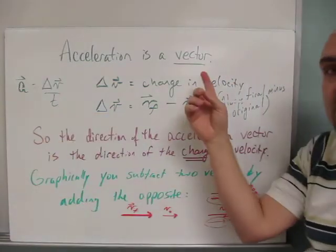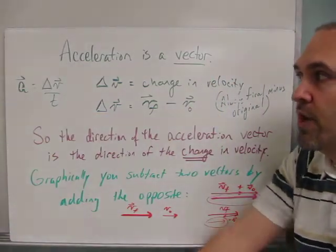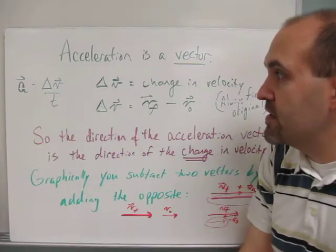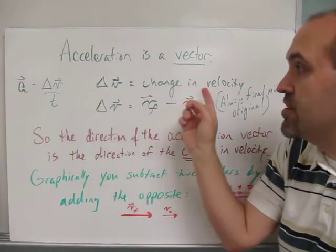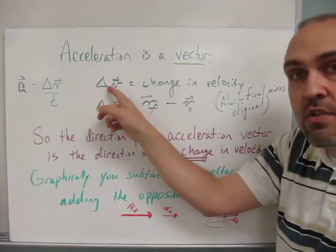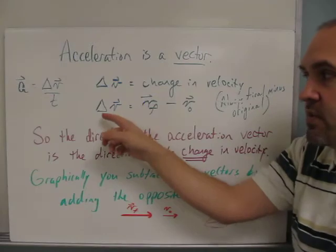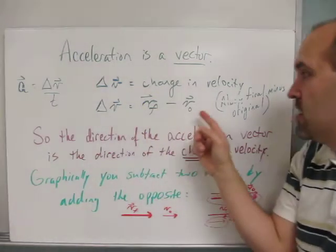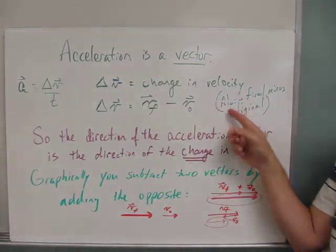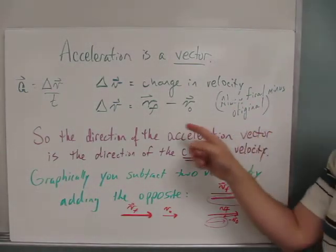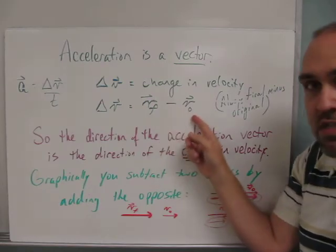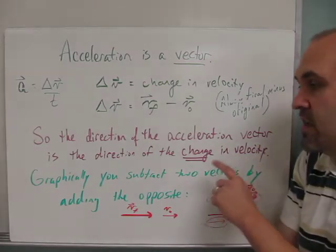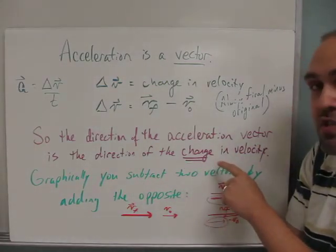Remember that acceleration is a vector quantity. We use the vector symbol above the a and the vector symbol above the v to indicate that it's a vector. That delta means changing, so we read this as change in velocity. And when you write delta v or delta x or delta anything, it's always the final minus the original. So it's the final velocity minus the original velocity. That'll give us our change in velocity. The direction of the acceleration vector is the direction of the change in velocity.